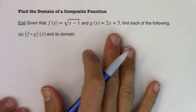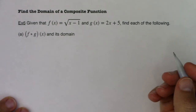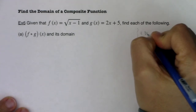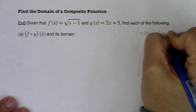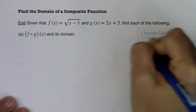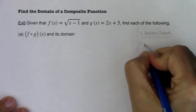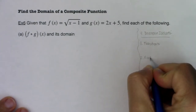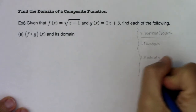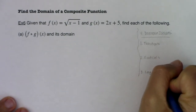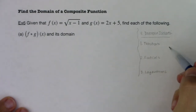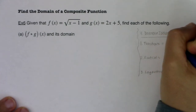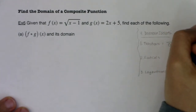I want to remind you there are three domain issues that you run into in math, so I'm going to put these off to the side so we keep reiterating them as often as needed. The big three: we've got fractions, we've got radicals, and we've got logarithms. These first two we've talked about a bit, and you should have seen them at some point in your math career. You can't have a fraction where your denominator is zero.